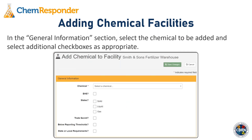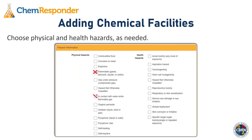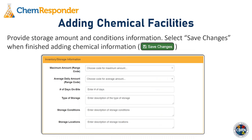The Add Chemical page has a General Information section at the top. You'll select the chemical to be added and check any additional boxes as appropriate — for instance, whether it is an extremely hazardous substance (EHS), its state (solid, liquid, or gas), whether it's a trade secret, below reporting thresholds, or subject to other state or local requirements. Below that is a Hazard Information section where you can select any number of physical or health hazards. The bottom section covers Inventory and Storage Information, where you provide storage amount and conditions. When complete, click Save Changes to add the chemical.